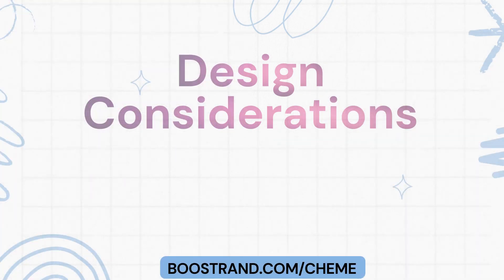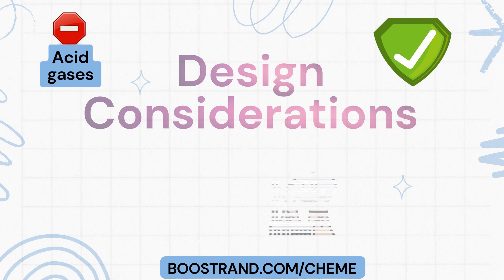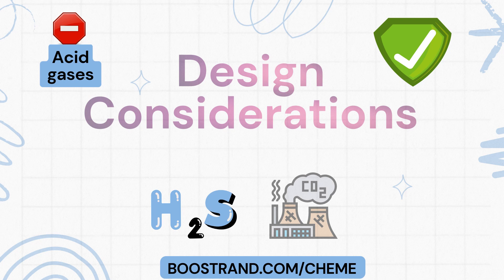Transforming natural gas into a product that meets commercial standards and safety requirements involves removing various impurities. The first impurity that is commonly removed is related to acid gases. Acid gases are mainly carbon dioxide, CO2, and hydrogen sulfide, H2S.